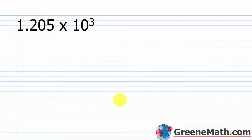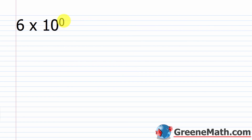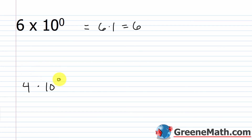1.205 times 10 to the 3rd: move the decimal three places to the right, giving 1,205. For 6 times 10 to the power of 0: anything to the power of 0 is 1, so this is 6 times 1, or just 6. This is how you write a single-digit number in scientific notation — for example, 4 is written as 4 times 10 to the power of 0.